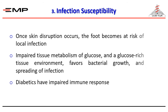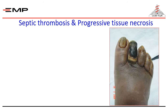Diabetics are more susceptible to infection. Once skin disruption occurs — a crack from dry skin, minor trauma, or an ulcer — the foot becomes at risk of local infection. Impaired tissue metabolism of glucose and a glucose-rich tissue environment favors bacterial growth and spreading of infection. Meanwhile, diabetics have impaired immune response, with impaired leucocyte transformation, chemotaxis, and phagocytosis.